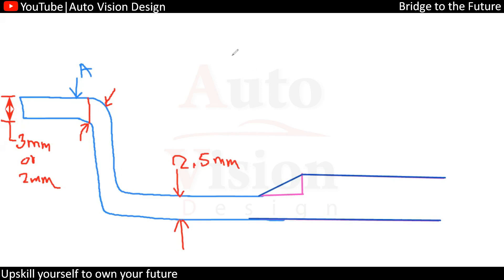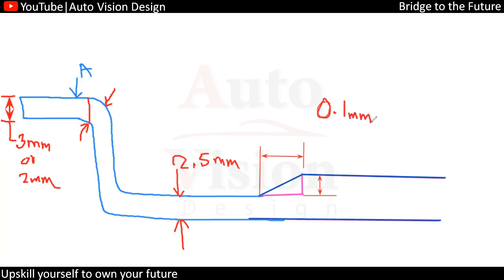In this area, whatever the transition is, from this area it needs to be taken care of over a length depending on how much thickness change we're going to have. The basic thumb rule is: 0.1mm thickness variation multiplied by 10x gives us the required length. So for 0.1mm, we require 1mm of transition length.